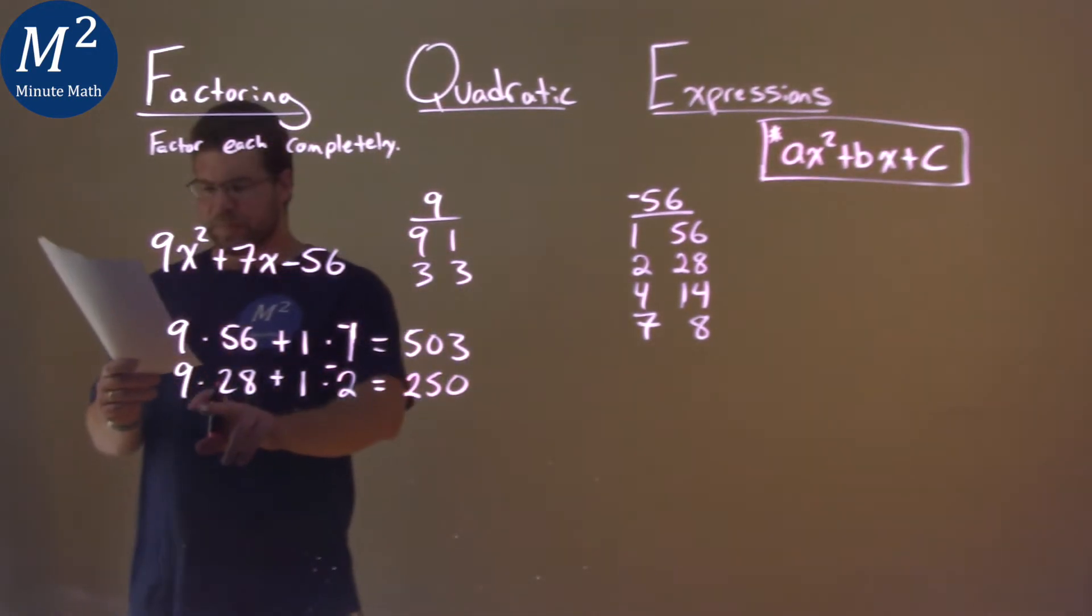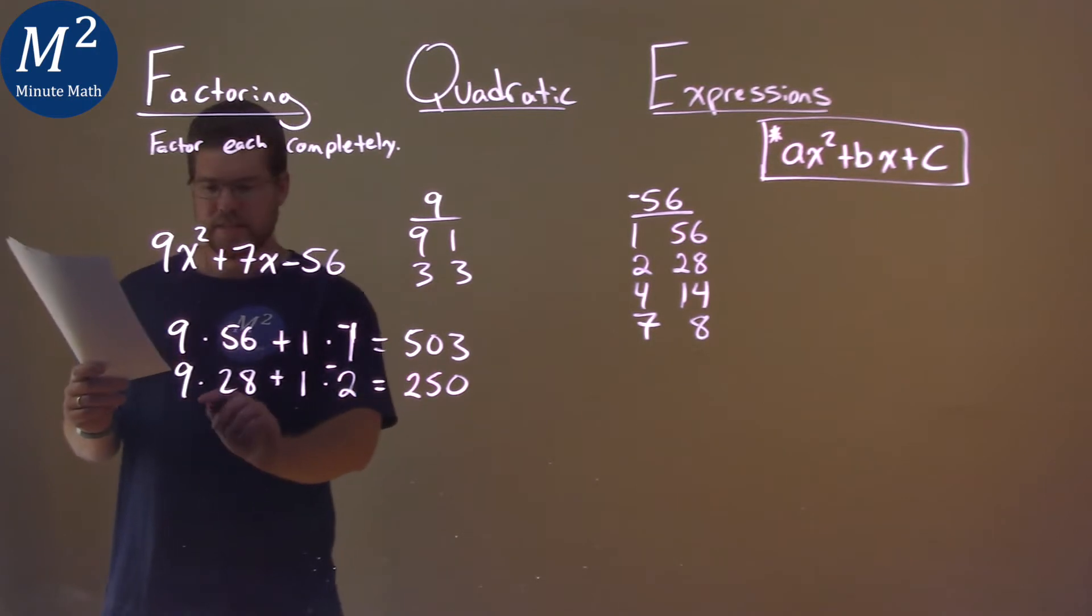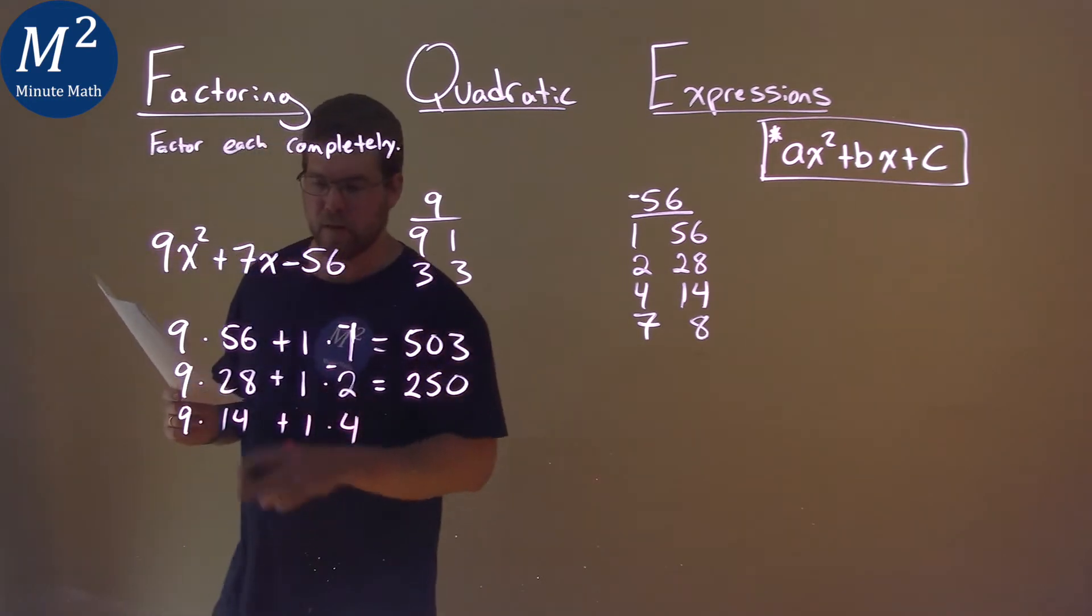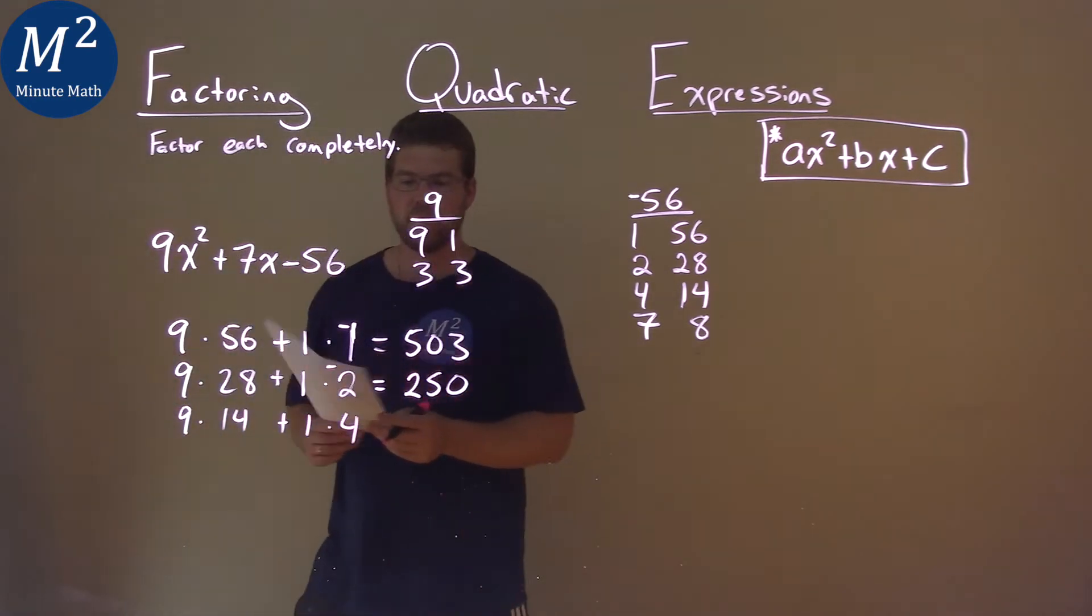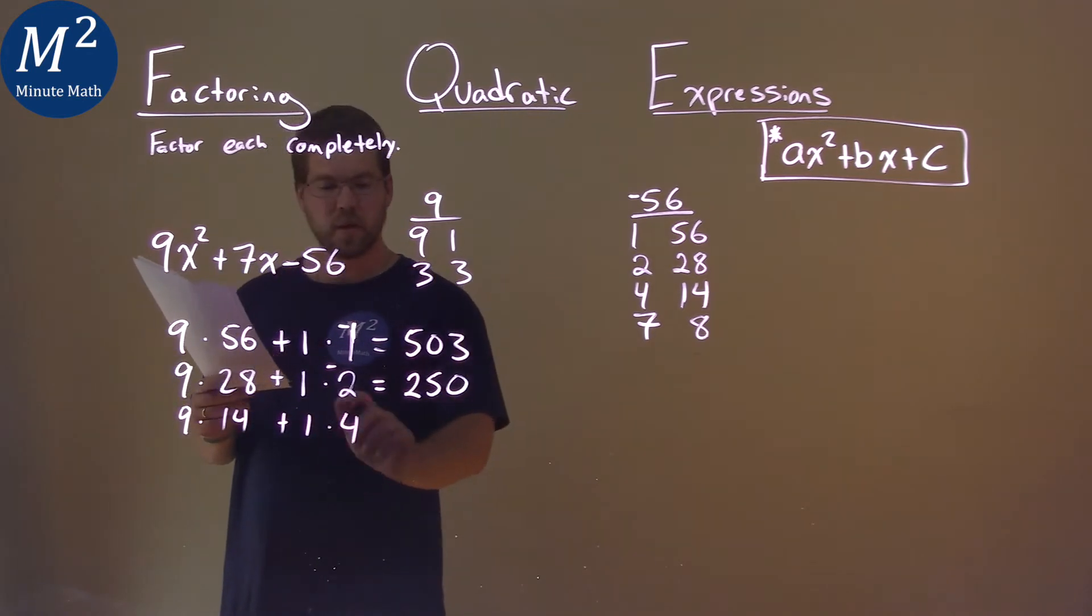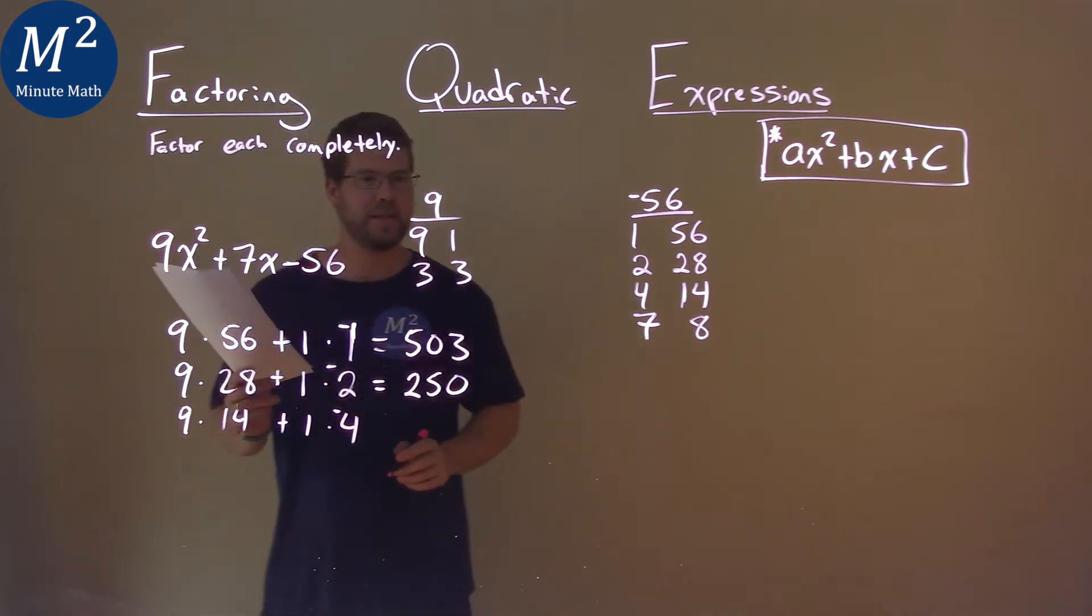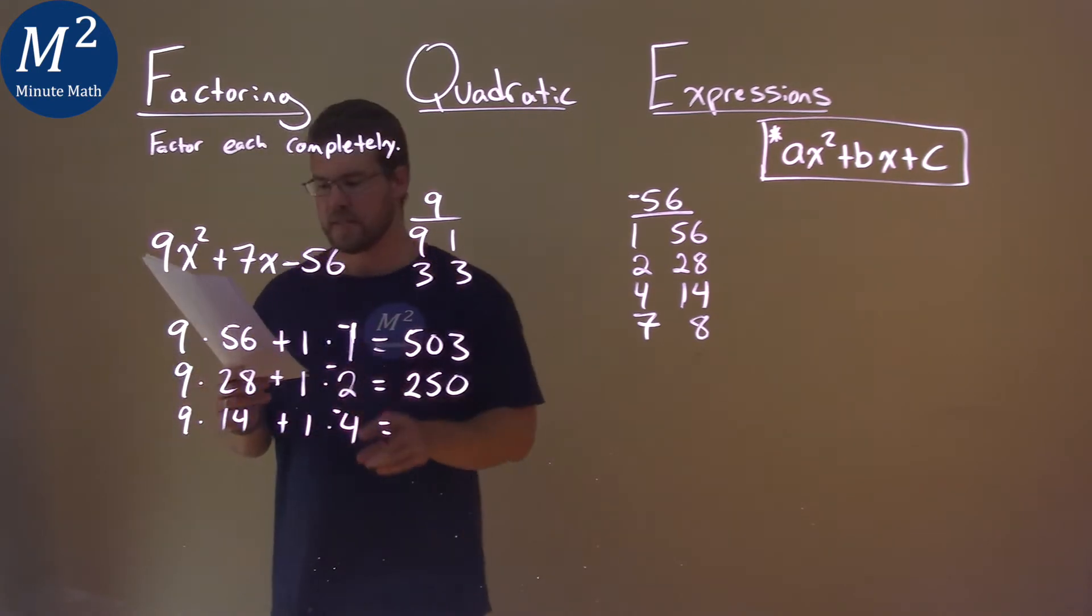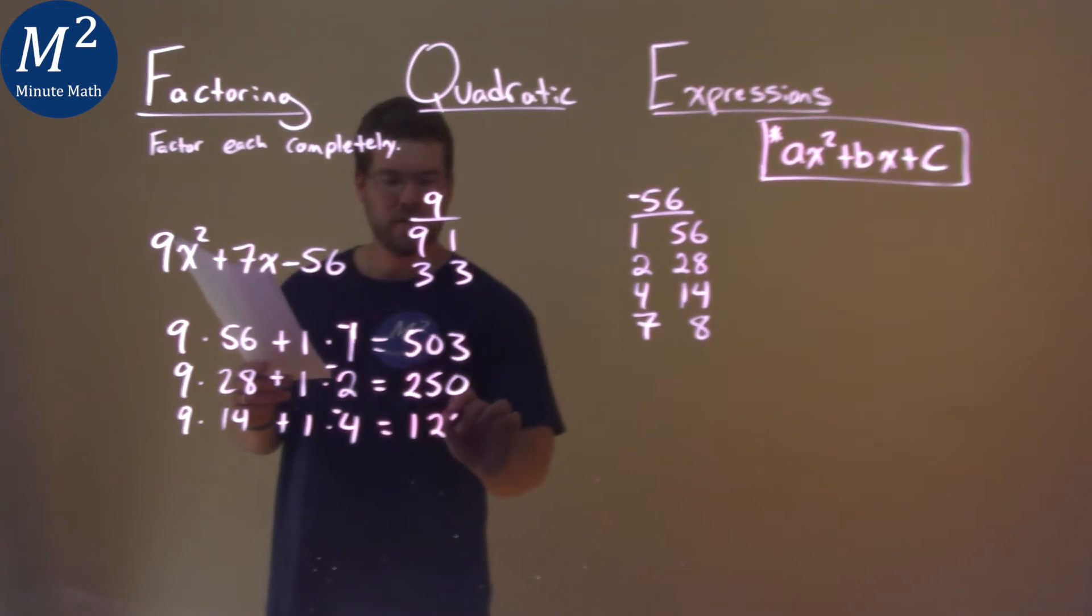Now, 9 times 14 and 1 and the 4. 1 times 4 is clearly the smaller of the two. I'm going to put a negative right there. Add that up. 9 times 14 plus 1 times negative 4 is a positive 122, not 7.